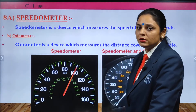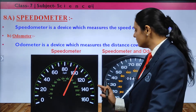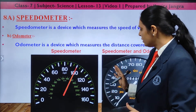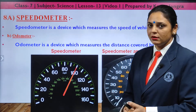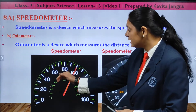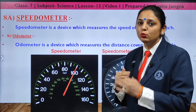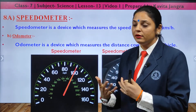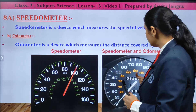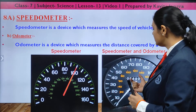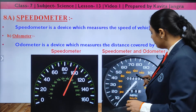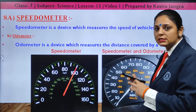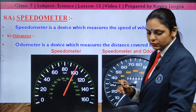The speedometer, seen on the dashboard of a vehicle, tells you the speed at which you are driving. The odometer gives the measurement of distance — how much total distance has been covered by your vehicle.